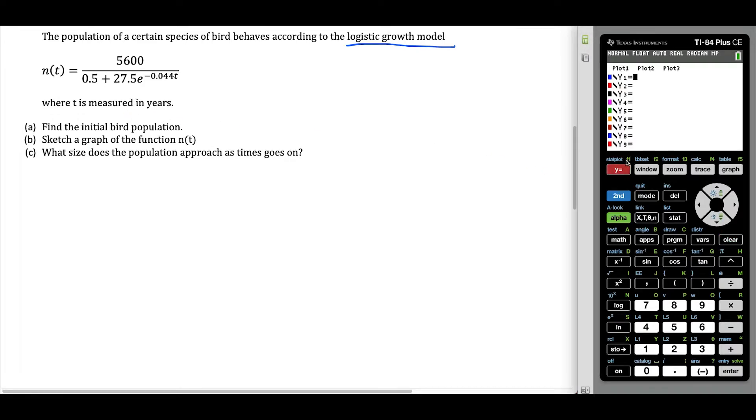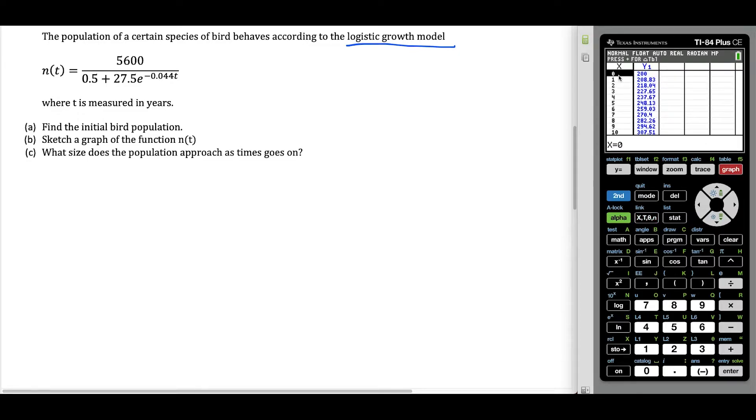What I want to do here is first find the initial bird population. We're going to type this function right into the calculator. If we have a fraction, we could write alpha Y equals to type that in. That's going to make it easy to input 5600 over 0.5 plus 27.5, and then E is second natural log, the button right next to four. Then we've got negative 0.044 T, but we're going to use X. The variable X is still going to do the trick.